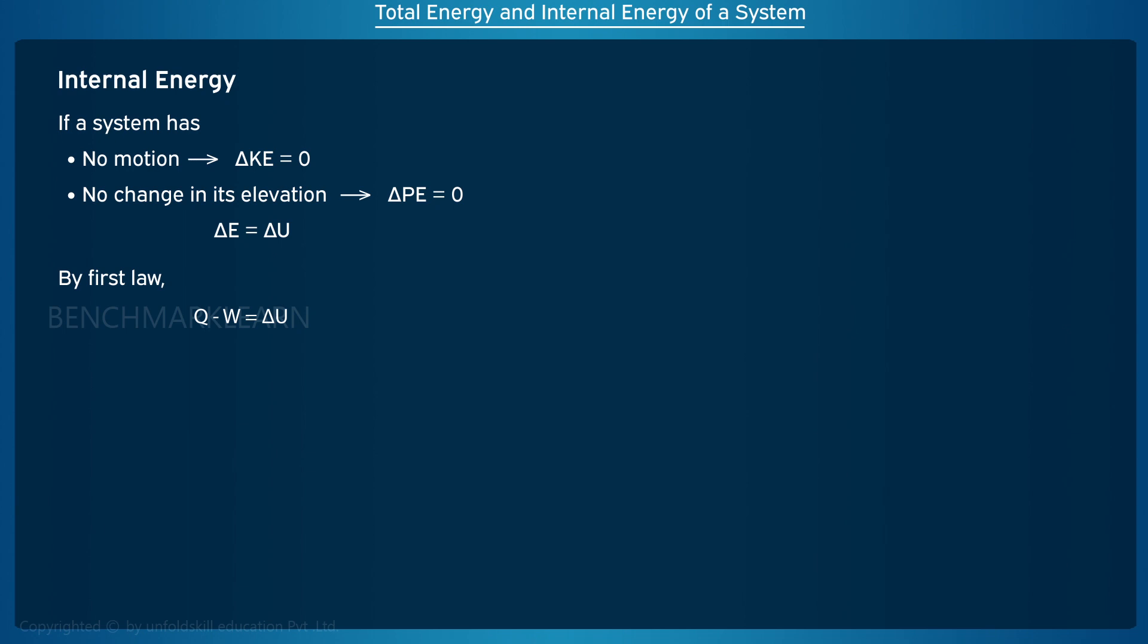Absolute value of internal energy U is difficult to evaluate. But we can easily find the change in the internal energy delta U of a system during a process.